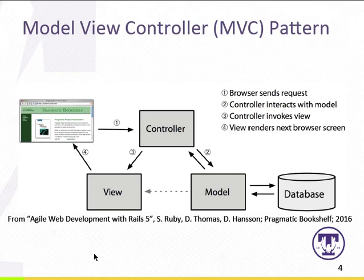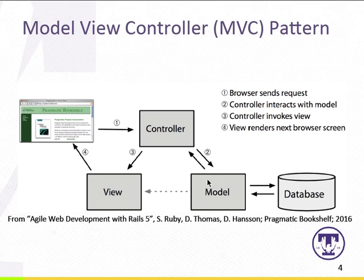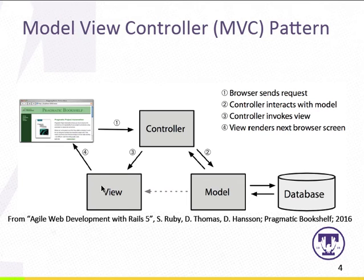In the MVC pattern, a browser through interaction with the user sends a request. That request is received by the controller, which does the intermediation between the system and the user to interact with the model. The model has access to the database so we can retrieve and manipulate information as needed. Control is then handed back to the controller, which uses the information from the model to render a view. That view is then presented to the user through the browser.